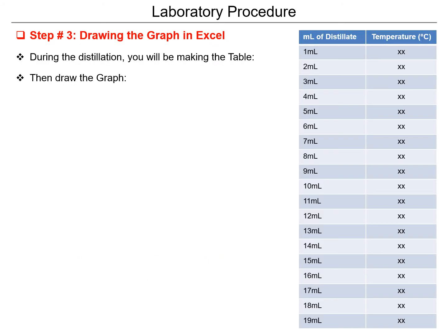After the experiment, you can make a graph by collecting data for each distillate at one milliliter intervals. The best way is to record the temperature for every one milliliter of distillate collected. You can also record for every five degrees of temperature increase, but collecting by distillate volume is more effective. For every one milliliter of distillate, record the temperature and plot the data on a graph.